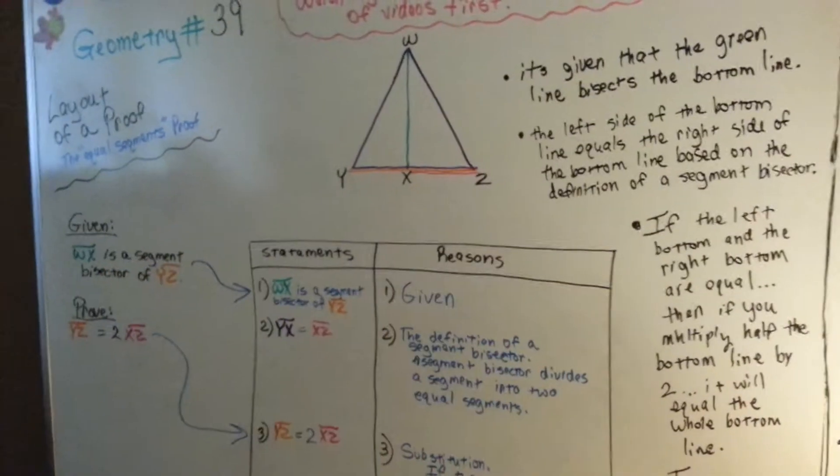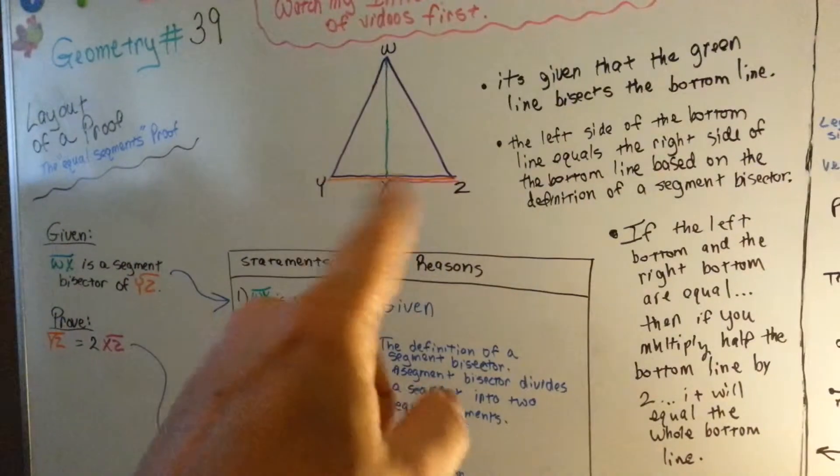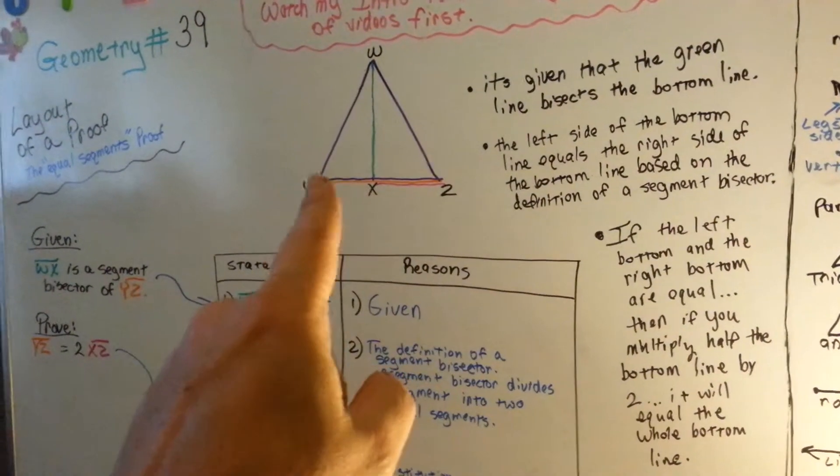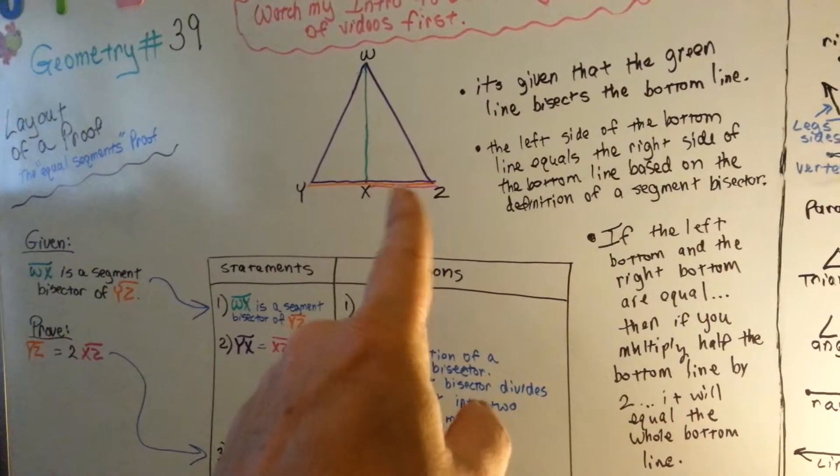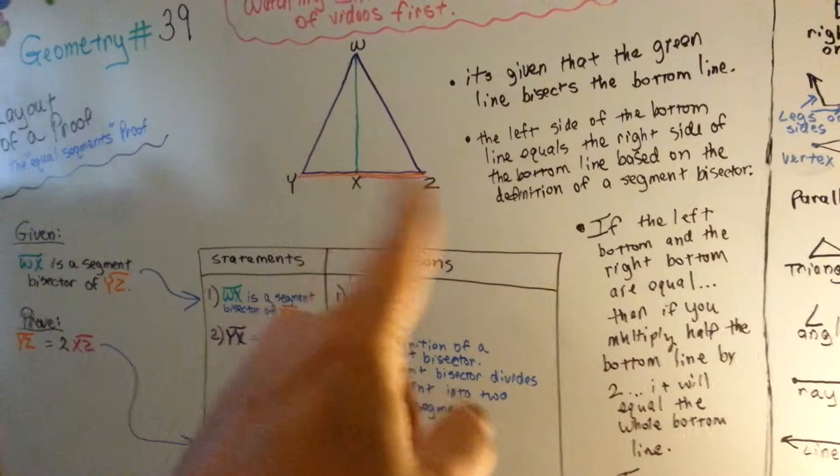This is basically what we did. It's given that the green line bisects the bottom line. The left side of the bottom line equals the right side of the bottom line, based on the definition of a segment bisector.